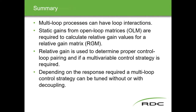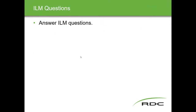In summary: multi-loop processes can have loop interactions and most often do. Static gains calculated from open loop matrices are required to calculate the gain values for the RGM. The RGM is used to determine proper control loop pairing and the severity of interaction, telling us whether we need a multi-variable strategy. Depending on the response required, a multi-loop strategy can be tuned with or without decoupling. This is probably the most difficult ILM in advanced process control, which is why it's covered third rather than first.